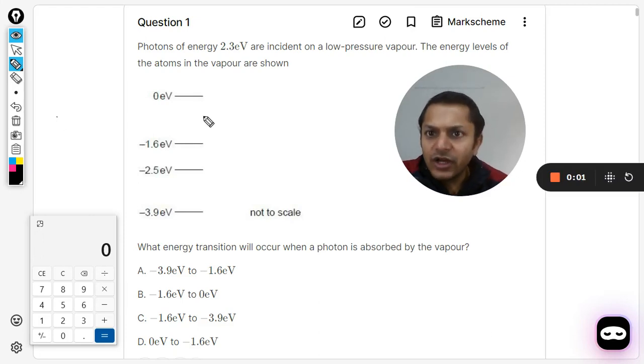Here students, let us see what is in this question. Photons of energy 2.3 eV are incident on a low pressure vapor. The energy levels of the atoms in the vapor are shown below. What energy transition will occur when a photon is absorbed by the vapor? It means that when the energy is absorbed by the electron...